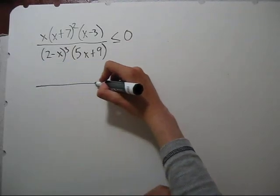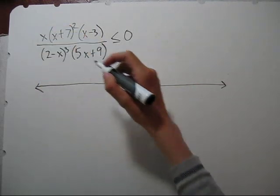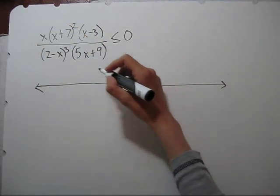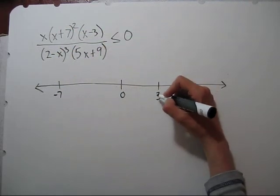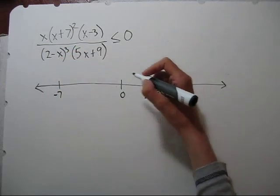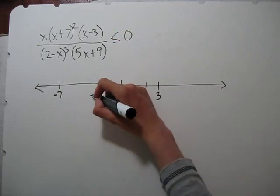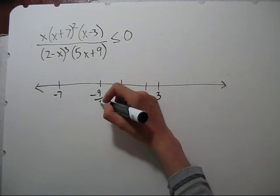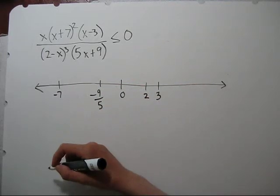It's all factored, so we can go right into the number line. This factor, we have a zero. We'll have a negative seven. This one gives us a three. This one, two, makes this one zero. And this one, negative nine-fifths. So those are our points where we'll have a potential sign change.